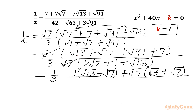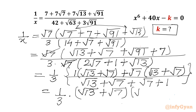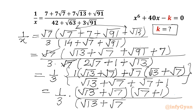I will split 2 root 7 as root 7 plus root 7. So the last term is: root 13 plus first root 7, second root 7, and 1. Now I can take root 13 plus root 7 common. So 1 over 3 times, I can write root 13 plus root 7, in the other bracket root 7 plus 1, over root 13 plus root 7 plus root 7 plus root 7 plus 1. This is the value of 1 over x.